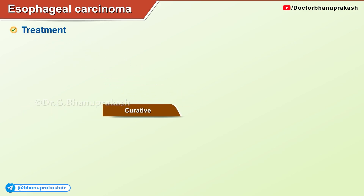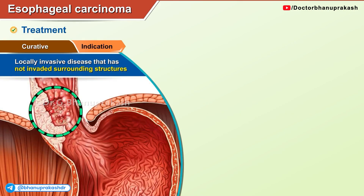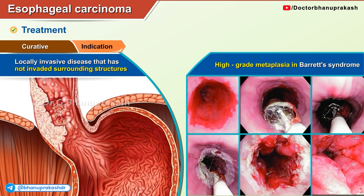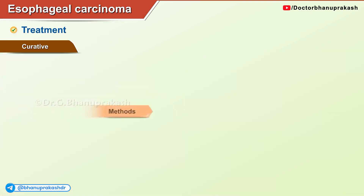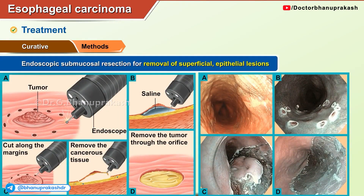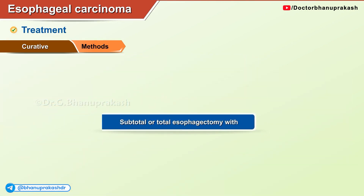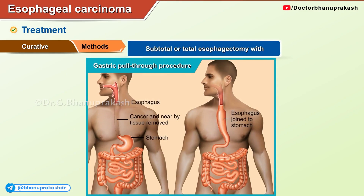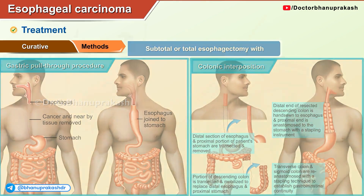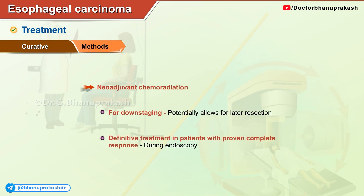Treatment — curative: indication is locally invasive disease that has not invaded surrounding structures, or high-grade metaplasia in Barrett's syndrome. Methods include endoscopic submucosal resection for removal of superficial epithelial lesions, subtotal or total esophagectomy with gastric pull-through procedure or colonic interposition, and neoadjuvant chemoradiation for downstaging, which potentially allows for later resection or serves as definitive treatment in patients with a proven complete response.